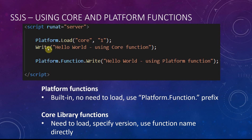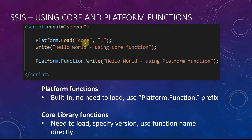In the example, write is available in both the core library and as a platform function. When using the core library, you can call write directly without any prefix after loading core. It just happens that write exists in both, but that doesn't mean all functions are in both — there are many functions in the core library not available as platform functions and vice versa. We'll look at that in future videos.